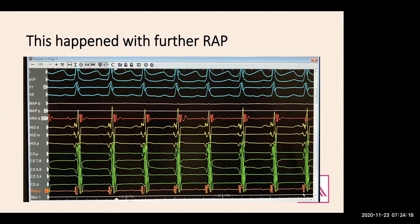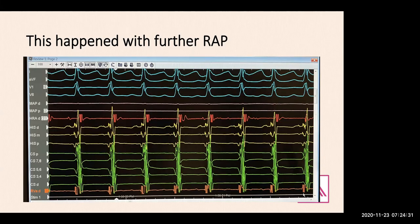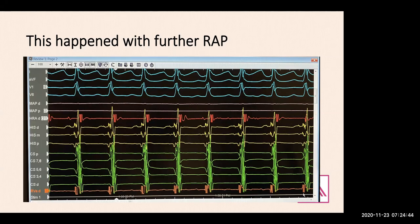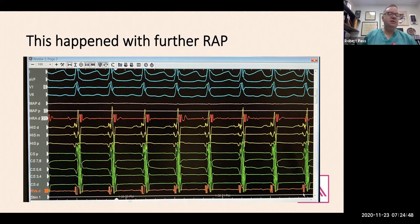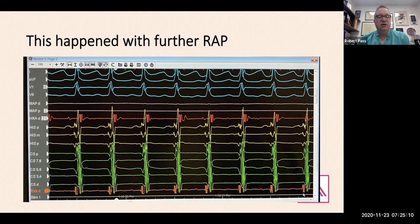How would you distinguish AVNRT from EAT or atrial flutter? You could give adenosine. If it's ORT or AVNRT, adenosine would terminate it. In EAT, adenosine usually does not terminate the arrhythmia. With atrial flutter, adenosine only impacts the AV node — you'd get the same atrial rate but the ventricular rate would slow due to transient heart block, so you'd see the atrium continuing at 185 bpm with a much slower ventricular rate.